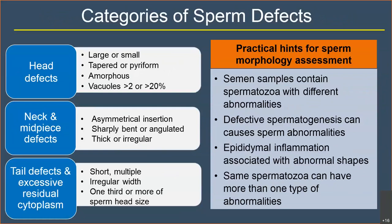Categories of sperm defects include head defects — large, small, tapered, amorphous — neck and midpiece defects such as asymmetrical insertion, bent necks, thick or irregular midpiece, and tail defects such as multiple tails, coiled tails, or excessive residual cytoplasm, which is characterized as abnormal when it is more than one third of the sperm head size. A semen sample will contain spermatozoa with different abnormalities, and the same spermatozoon can have more than one abnormality — called mixed abnormalities.